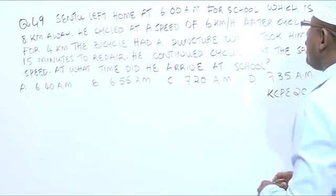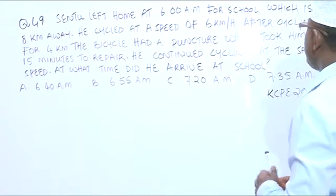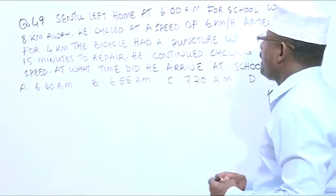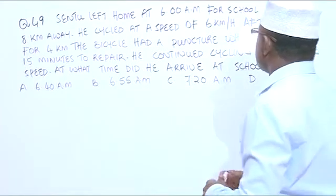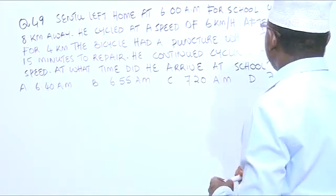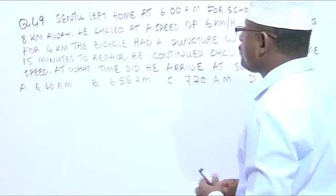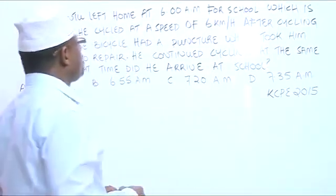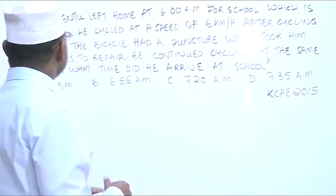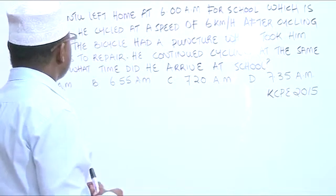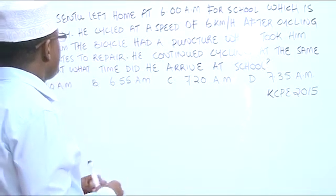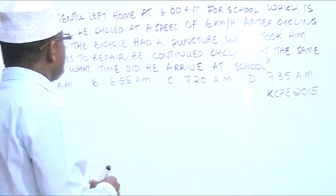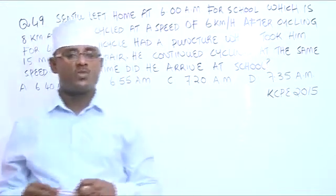Sentu left home at 6 a.m. for school, which is 8 kilometers away. He cycled at a speed of 6 kilometers per hour. After cycling for 4 kilometers, the bicycle had a puncture, which took him 15 minutes to repair. He continued cycling at the same speed. At what time did he arrive at school?